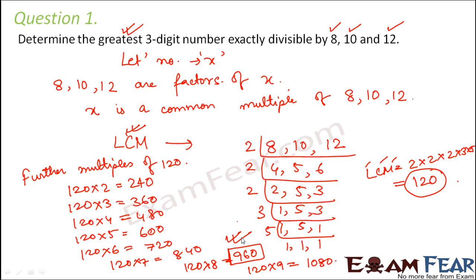We will arrive at a point beyond which the number is no more 3-digit. 120 × 9 = 1080, which is a 4-digit number. So the greatest 3-digit number we have come across is 960. So 960 is the answer because it is the greatest 3-digit number which is a common multiple of 8, 10 and 12. Whenever we have to find a common multiple, we find the least common multiple first, and then multiples of that LCM are also common multiples of 8, 10 and 12.